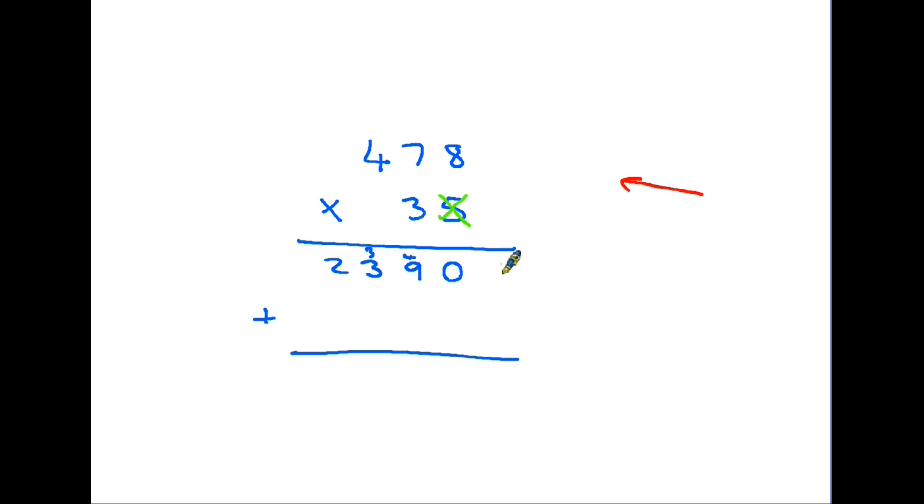We start again with 3 times 8. The important thing to remember—I mentioned it earlier—is that when we are starting this, the first answer has to go immediately below the 3 that we are multiplying with. So 3 times 8 is 24, the 4 has to go under the 3—very important—and then we carry the 2 on. That's 3 times 8. We're now going to do 3 times 7, which is 21, add the 2 that we've carried—that's 23. The 3 goes in there, we carry the 2.